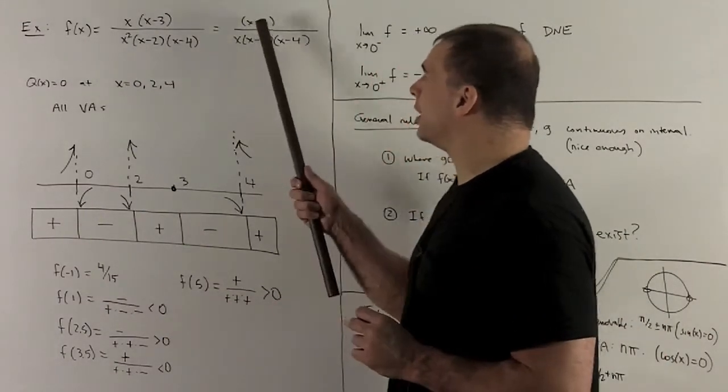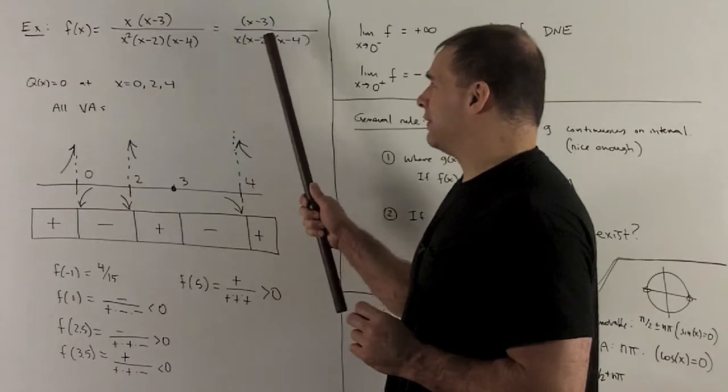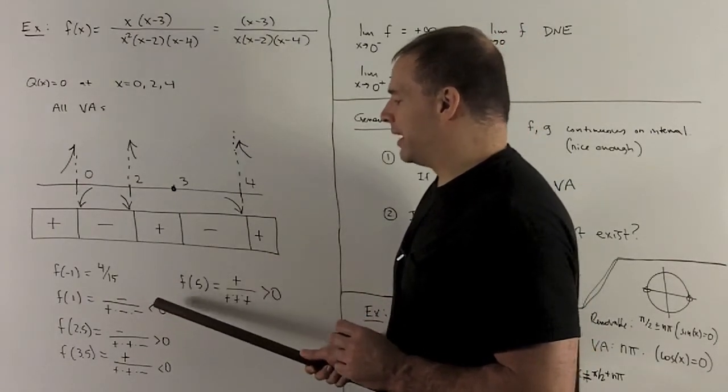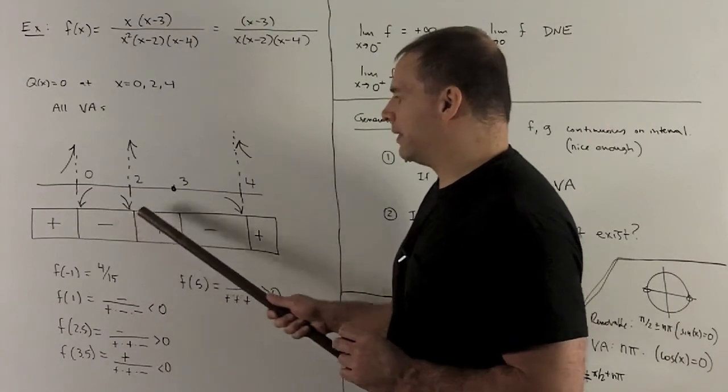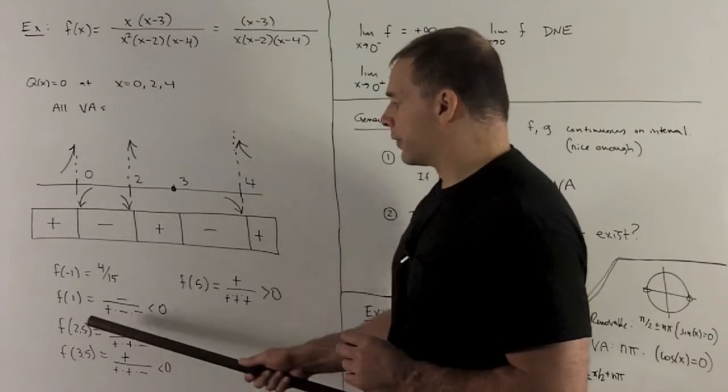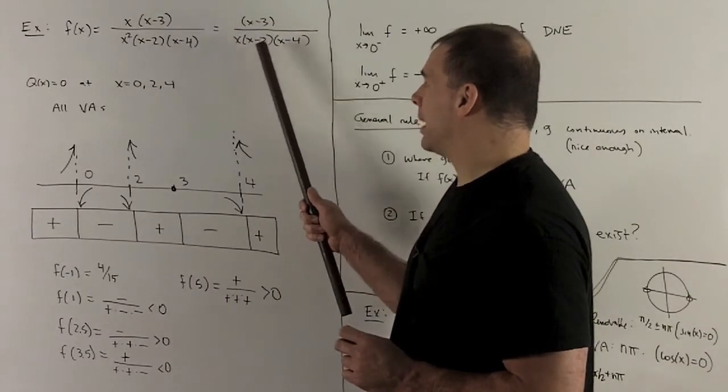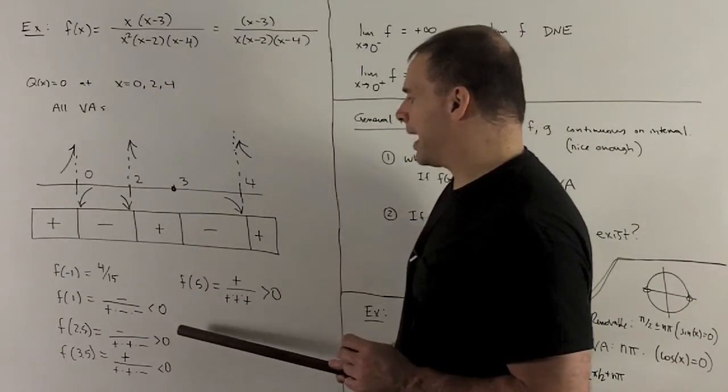So, for instance, if I put a 1 into here, I have negative, positive, negative, negative. So, I'm looking at a negative over two negatives. That's going to give me a negative number. So, we're negative in this region. From 2 to 3, I could put a 2 1⁄2 in, which is going to give me a negative, positive, positive, negative. So, that's going to be a positive.